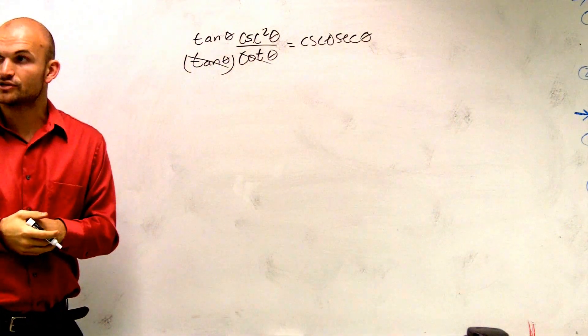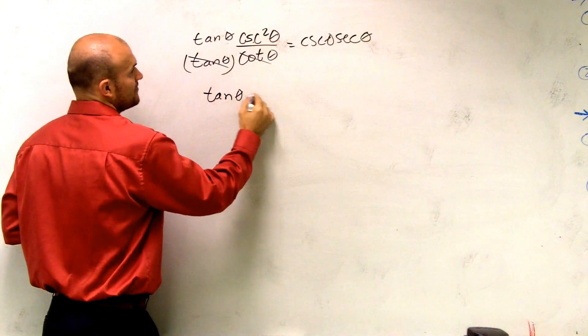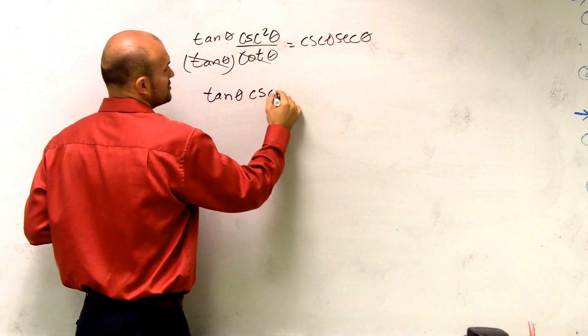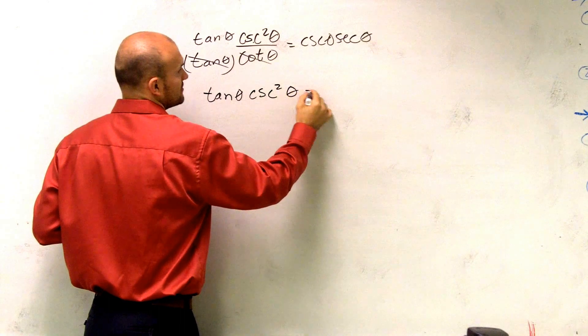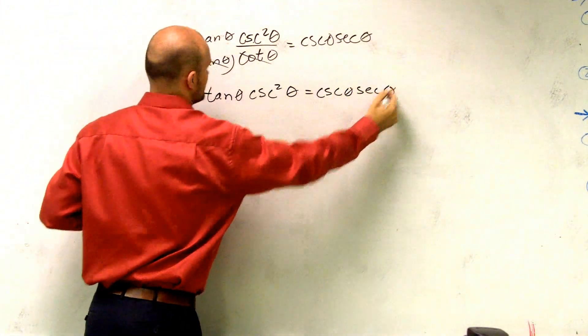Those now cancel out because they're reciprocals of each other. So therefore, I'm left with tangent of theta times cosecant squared of theta equals cosecant of theta, secant of theta.